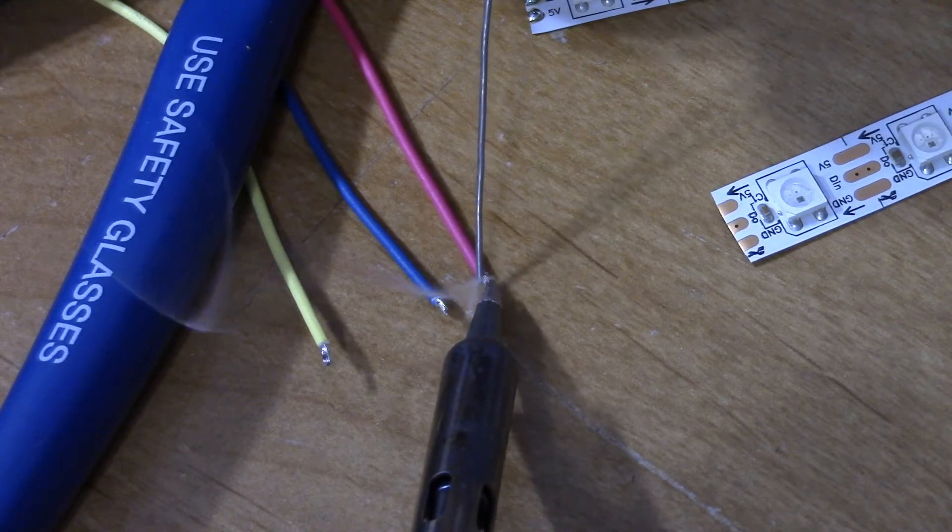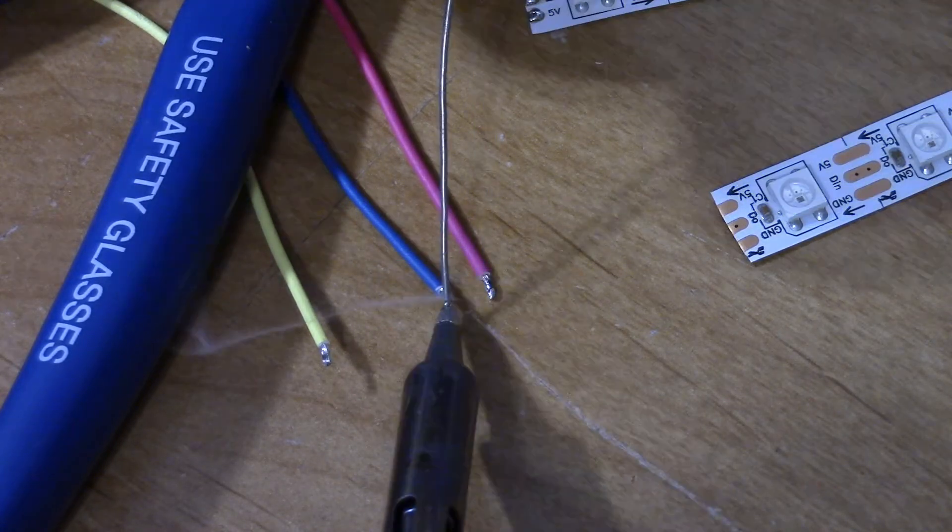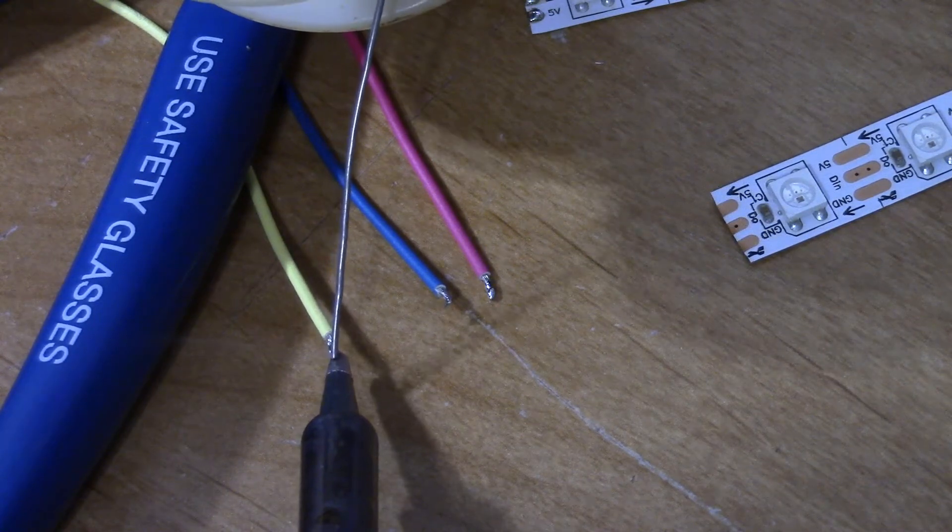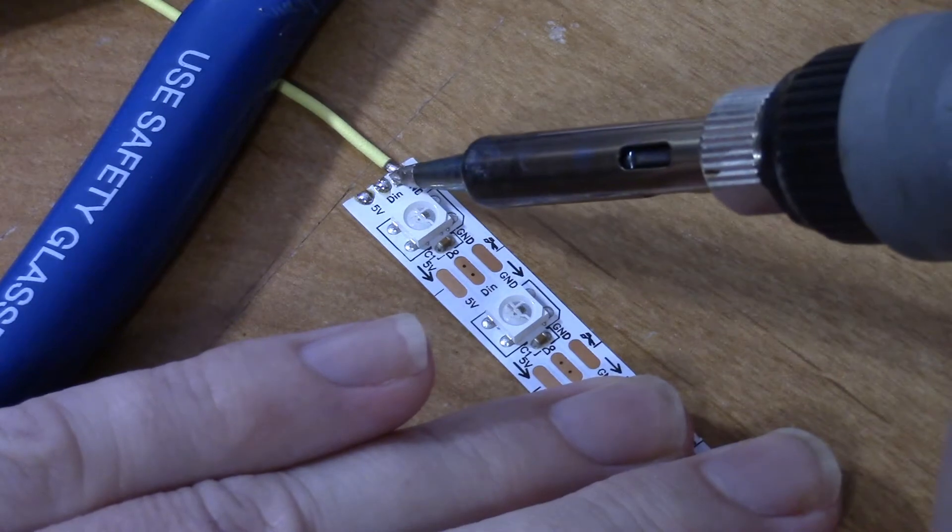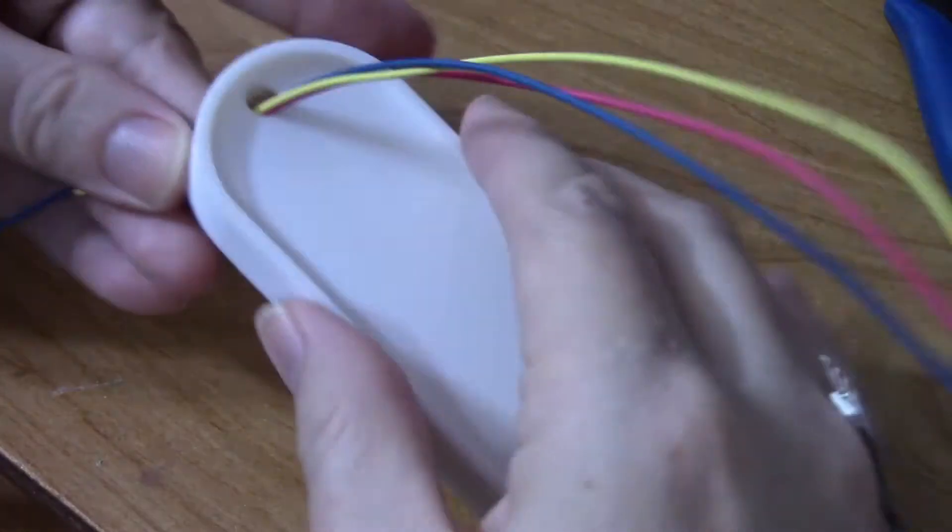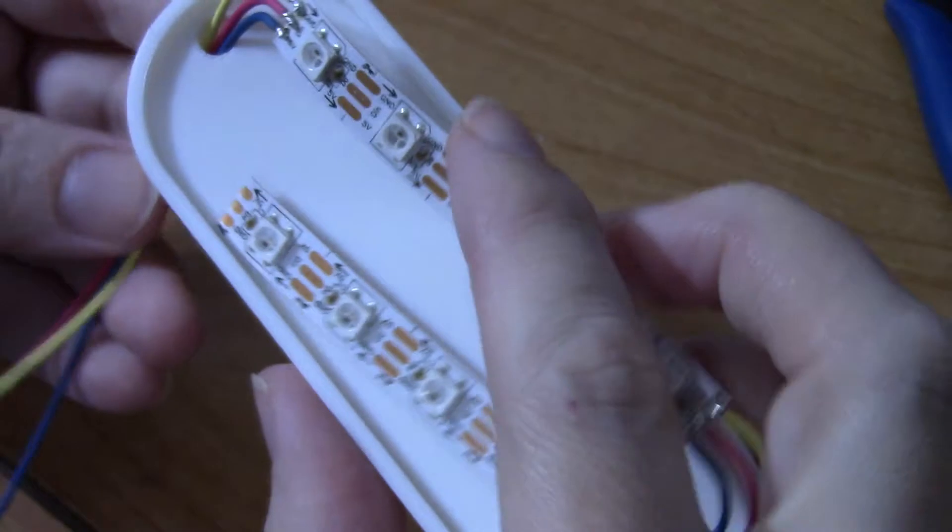Tin a new set of wire leads to connect back to the controller. And solder those wire leads to the front end of the first strip. Run those wire leads through one of the holes in the 3D printed base.